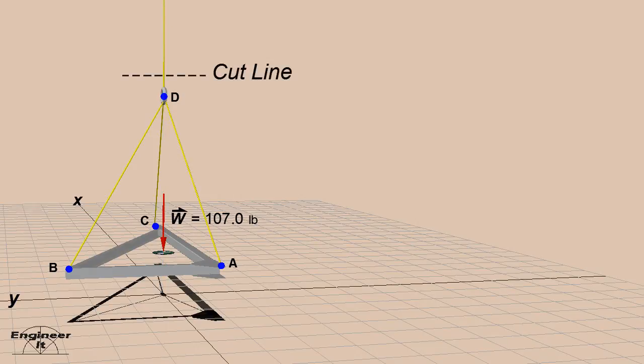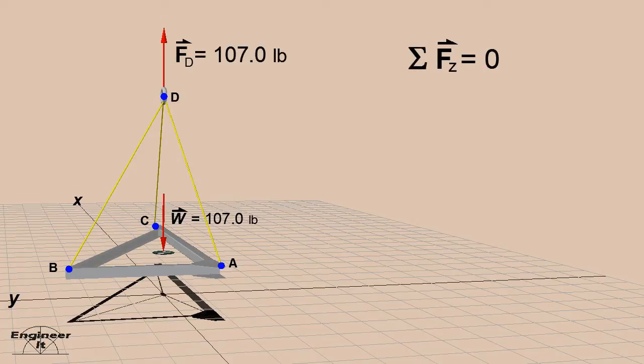Using a cut line to isolate a free body diagram, replace the top rope with the force vector FD. Using the equilibrium equations, compute FD.